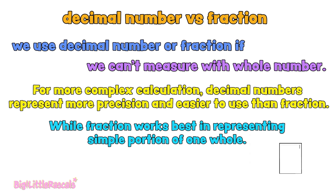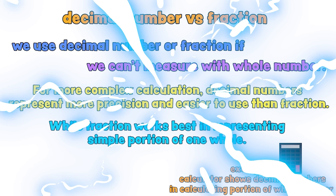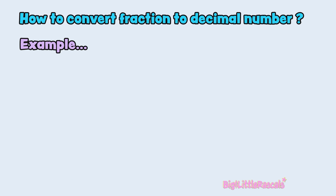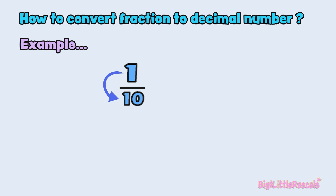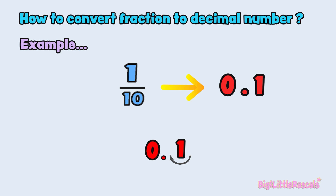An example of decimal numbers you can find is when you use a calculator — it shows decimal numbers for calculating the portion of whole numbers. But how do you convert a fraction to a decimal number? Example: one-tenth. Let's divide 1 at the top by 1 at the bottom — it gives us 1. Because there is still one zero left at the bottom, we need to jump one time to the left. Add the decimal point after that, and add zero at the front to indicate that this is less than one whole. One-tenth in fraction is represented in decimal number as 0.1.